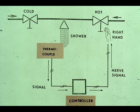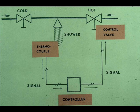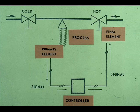Now suppose we wanted to automate the shower system. We replace the left hand with a thermocouple, which will sense the shower-water temperature. The thermocouple transmits this temperature to a controller, which has replaced the brain. The controller compares this actual temperature with the set point temperature, and then sends a signal to a control valve, which has replaced the right hand shower valve. The control valve then opens or closes to bring the water temperature to the set point or desired temperature. Now you have an automatic control loop that has all the essential elements: the process, primary element, controller, and final element.